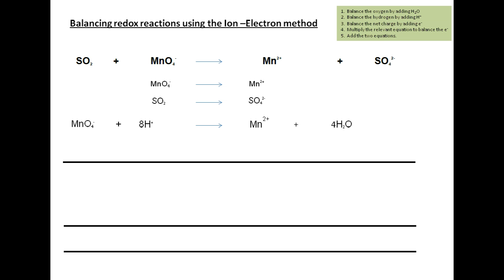The third step is to balance the net charge by adding electrons. MnO4⁻ is minus one and 8H⁺ gives plus eight, so the net charge on the left-hand side is plus seven. The net charge on the right-hand side is plus two. To equate the charges, we add five electrons to the left-hand side, giving a net charge of plus two on both sides. That completes the equation for MnO4⁻ becoming Mn²⁺.